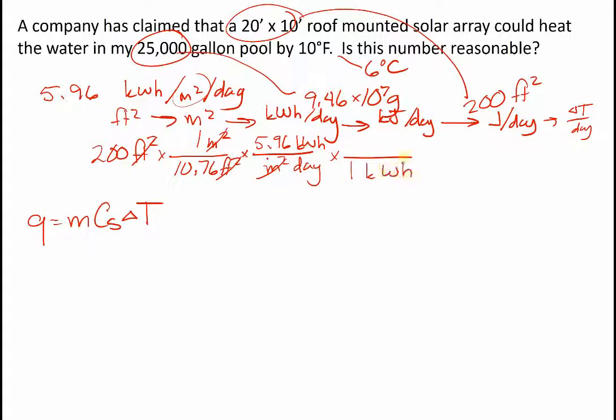One kilowatt hour is 3,600 kilojoules. So that's going to get rid of the kilowatt hour. I'm now in kilojoules per day. And then I'll go 1 kilojoule is 1,000 joules. And dimensional analysis isn't really going to work for my last step of going to temperature. I'm going to have to pause there a little bit.